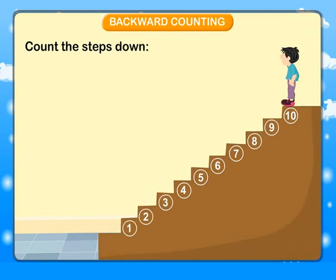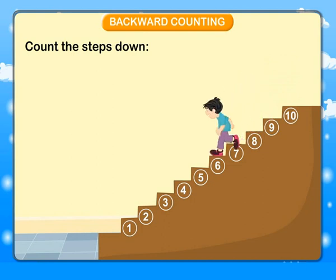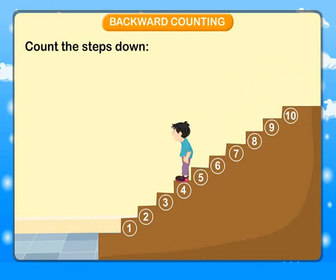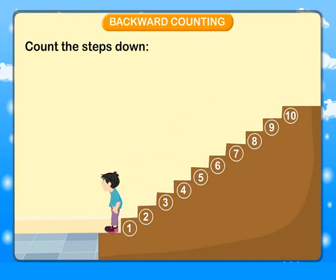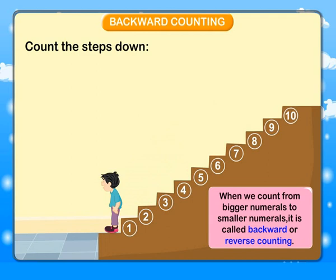Backward counting. Count the steps down. Start: 10, 9, 8, 7, 6, 5, 4, 3, 2, 1. Finish. When we count from bigger numerals to smaller numerals, it is called backward or reverse counting.